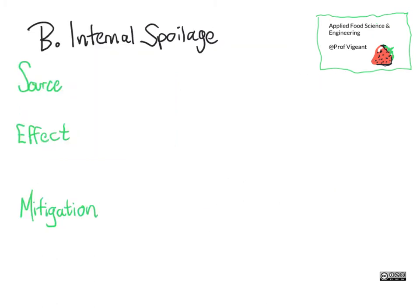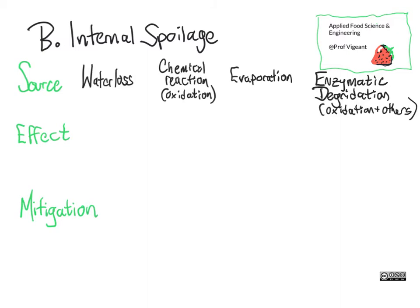Let's focus in on what I'm going to call internal spoilage — that is, fruits and vegetables going off because of things that happen without any outside influence of microbes. Here are a bunch of options, and let's go through them one at a time and talk about what happens.